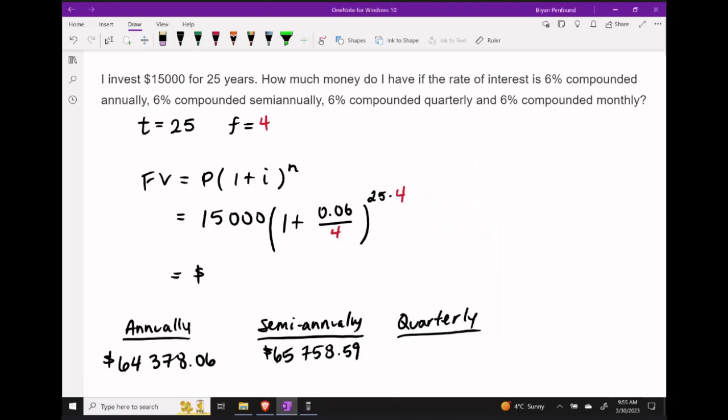Next, by changing our frequency number to 4, we can start to calculate what our future value is going to be compounded quarterly. Inputting this into our calculator, we should get $66,480.68.